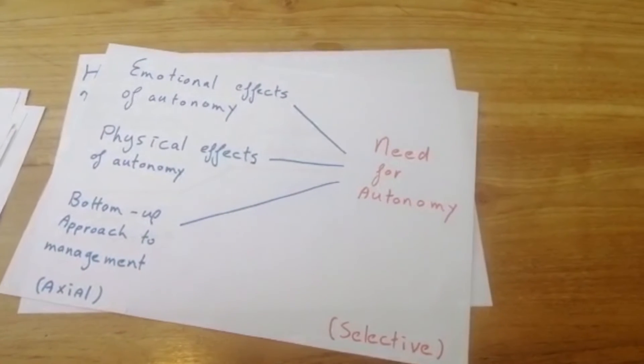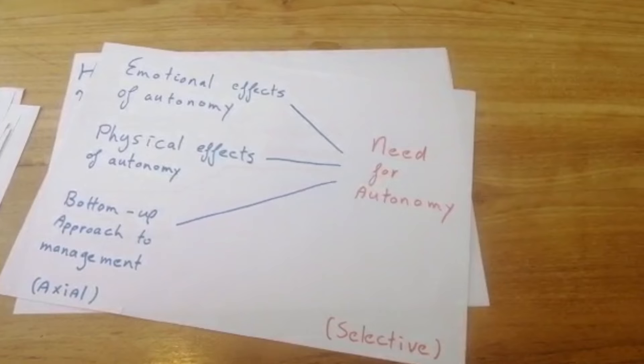With respect to our selective codes, we found that overall we have this overarching scheme of need for autonomy. This need for autonomy is grounded in actual codes of emotional effects of autonomy, the physical effects of autonomy, and the bottom-up approach to management. Time after time, after conducting our interviews, we found that people would tie in autonomy with having a positive and enlightening mood in the workplace. It makes people feel like they have more of an effect on the workplace, that they have more of a position. The manager trusts the employee and gives them respect. Overall, these overarching axes tying into all these open codes pushes it all towards the need for autonomy.